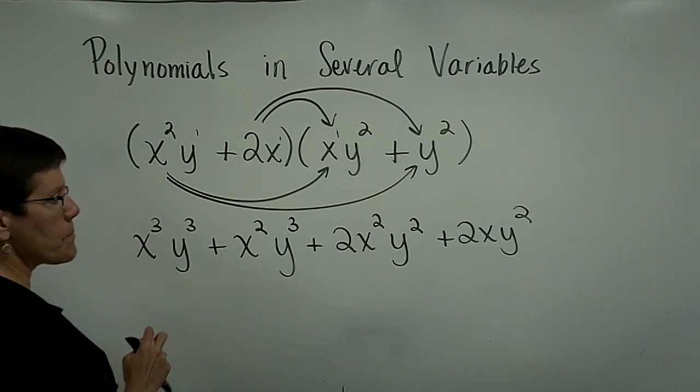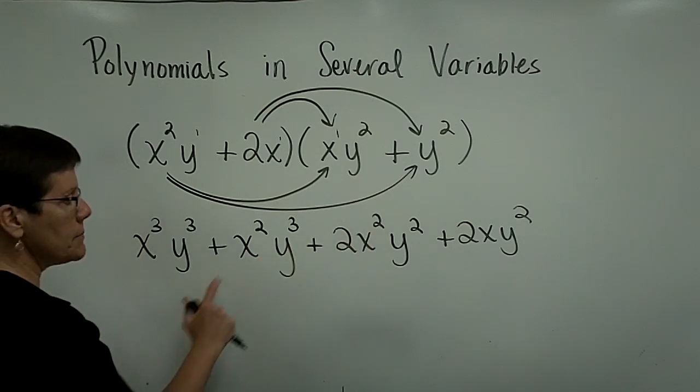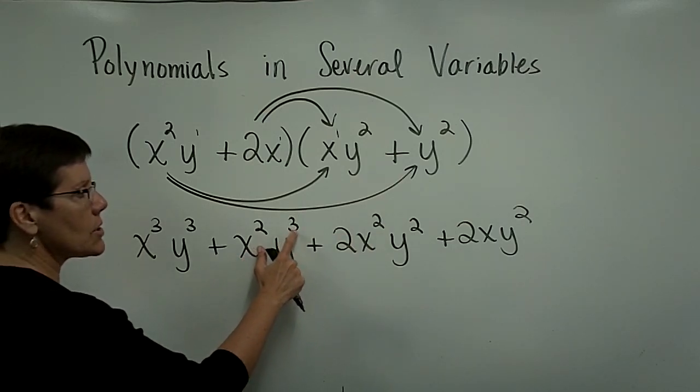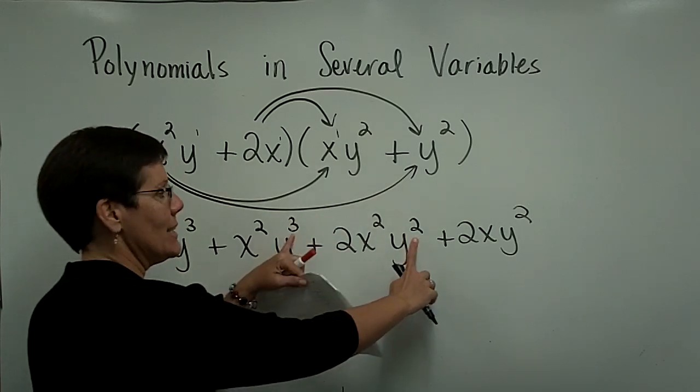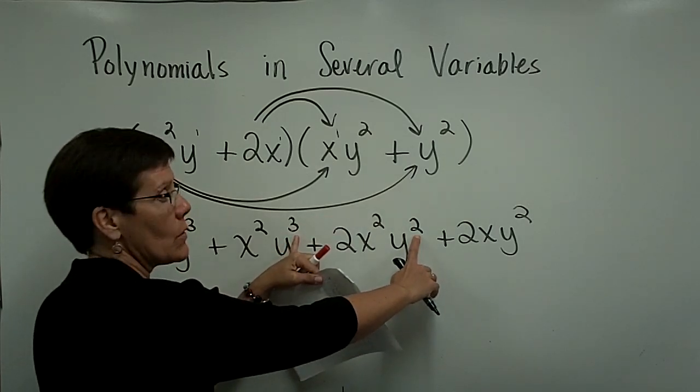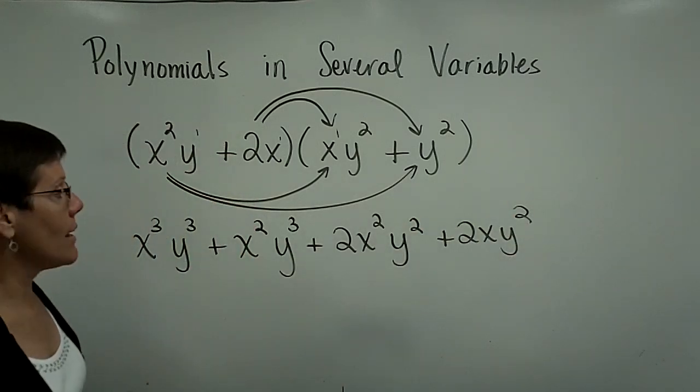I'm just stepping back a minute to see if there's any like terms. There are no x, y's both raised to the third power down here. Here x is squared, y is cubed. Here x is squared, y is squared. Those are not like terms because of the different exponent on the y's. And none of these terms has just x to the y². I'm done.